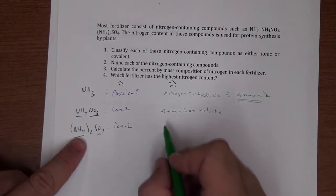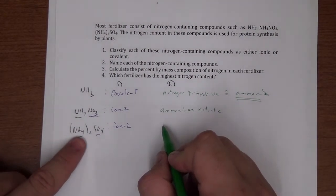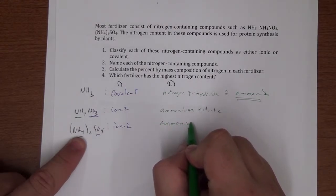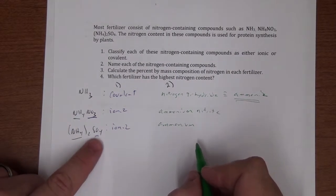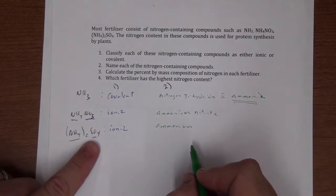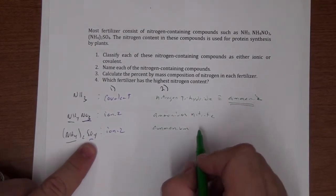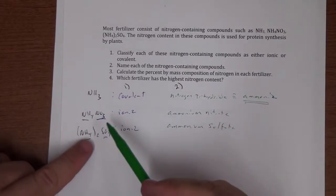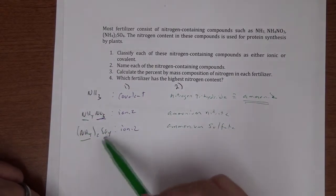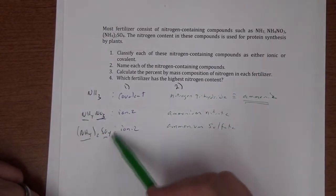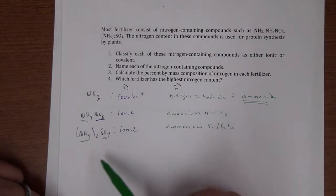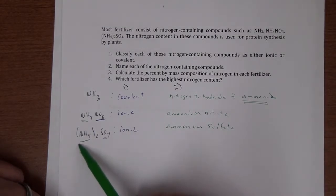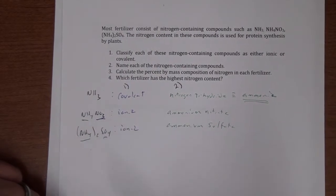For (NH₄)₂SO₄, we name the cation first — ammonium — then the anion — sulfate. So this compound is ammonium sulfate. These polyatomic ions we simply need to memorize: their names, their formulas, and their respective charges.